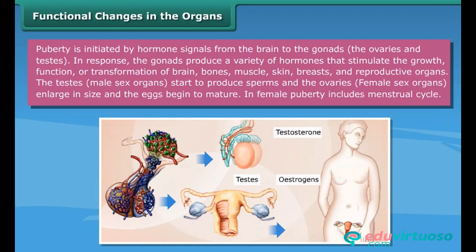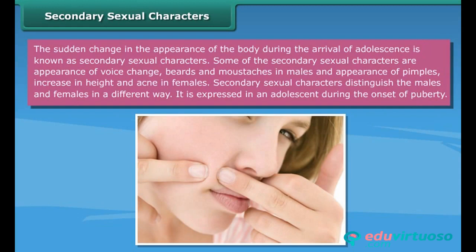In females, puberty includes the menstrual cycle. Secondary sexual characters are the sudden changes in the appearance of the body during the arrival of adolescence. Some secondary sexual characters include voice change, growth of beards and mustaches in males, and the appearance of pimples, increase in height, and acne in females. Secondary sexual characters distinguish males and females and are expressed during the onset of puberty.